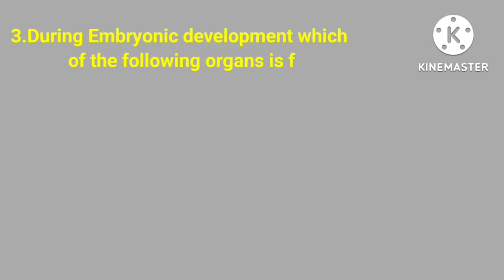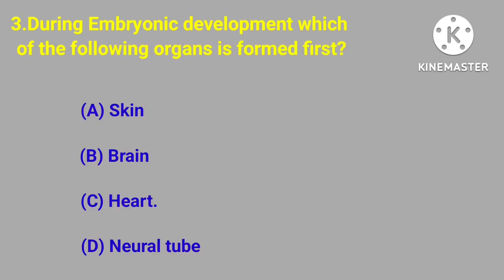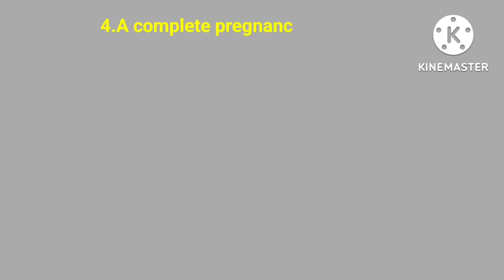Question number three. During embryonic development, which of the following organs is formed first? Skin, brain, heart, neural tube. Correct answer is neural tube.